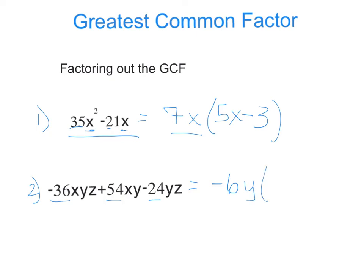So, then, what do I have to multiply negative 6y by to get negative 36xyz? Well, that is going to be a positive 6xz. To get a positive 54xy, I'm going to have to multiply by a negative 9x, because I need that x there. And then, to get a negative 24yz, I need a positive 4z.